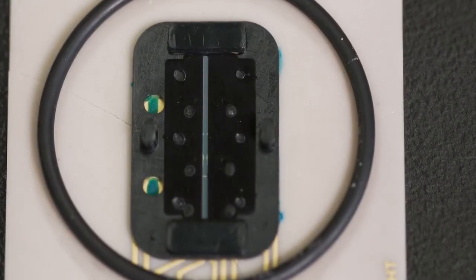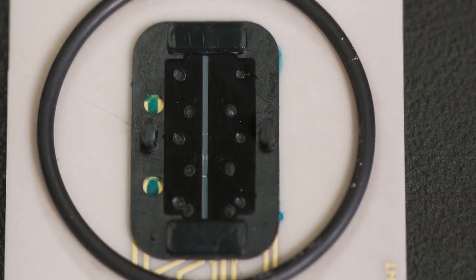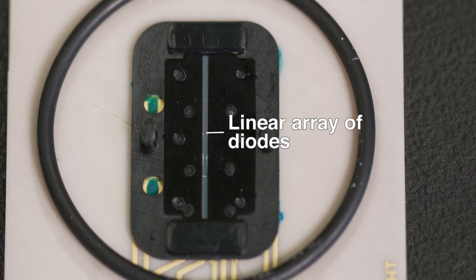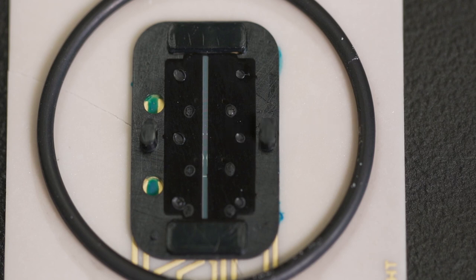The detector in this instrument is a diode array. The diode array is about one centimeter long, with 1024 individual detectors. The different wavelengths of light simultaneously strike different parts of the array. The signal is then digitized and sent through electronics to the computer.